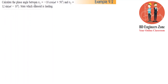Calculate the phase angle between V1 equal to minus 10 cos(ωt + 50°) and V2 equal to sin(ωt - 10°). State which sinusoid is leading. We will look at V1 and V2 equations.